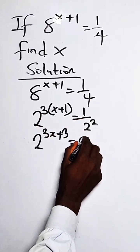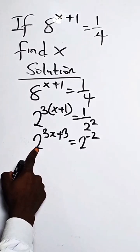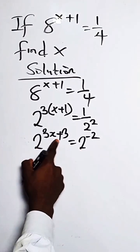We can write this as 2 raised to the power minus 2. Now we have the same base, so let's equate the exponents. We have 3x plus 3 equals minus 2.